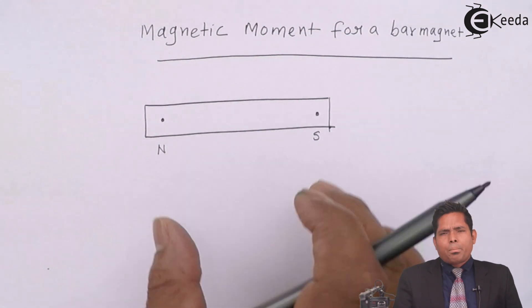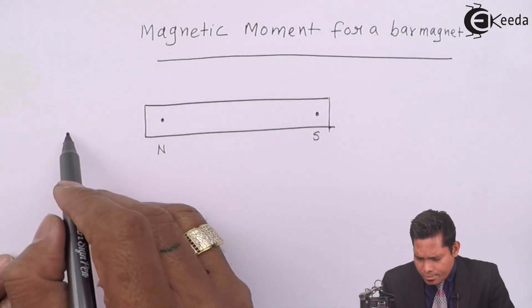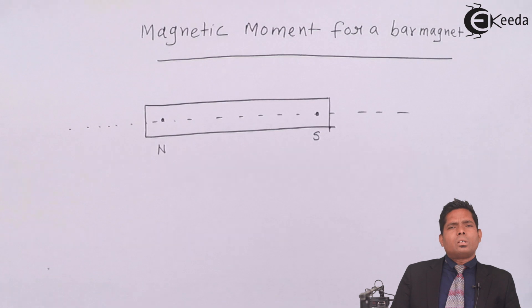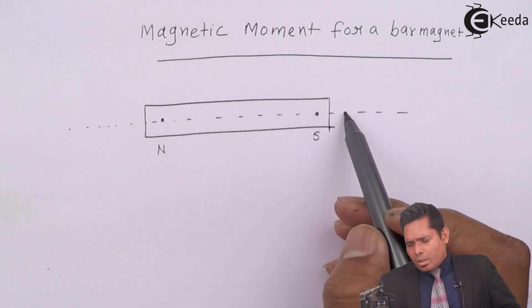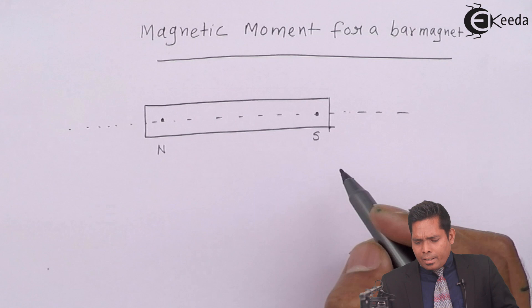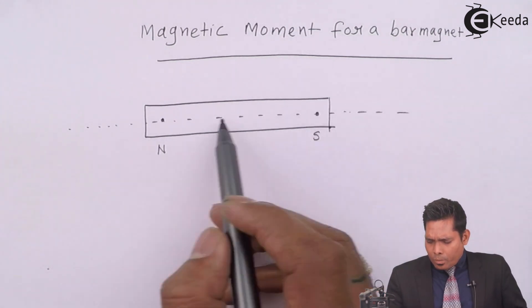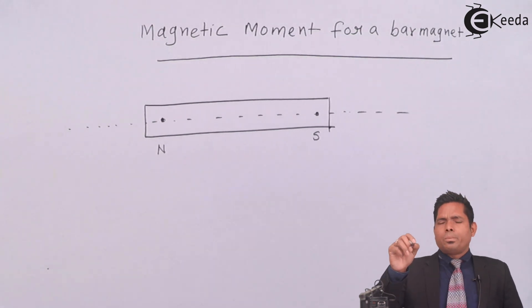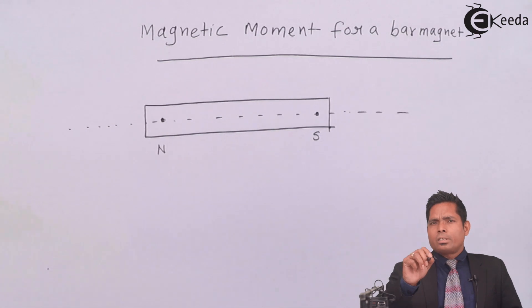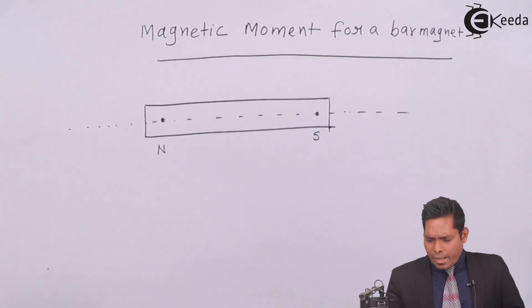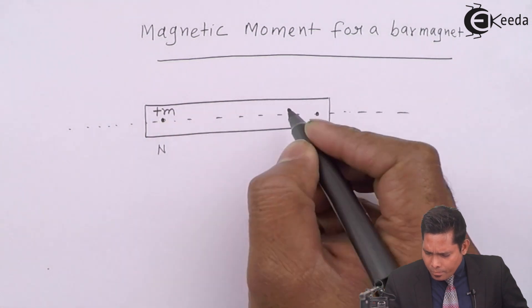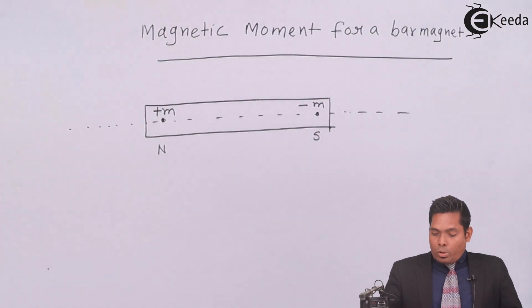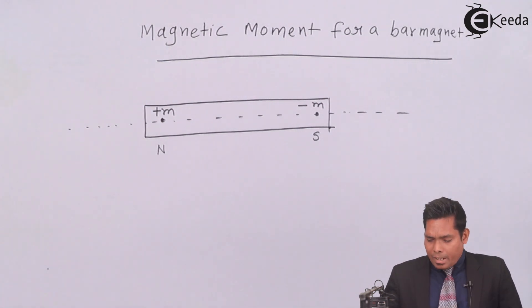Suppose this is a bar magnet and this is the axis — the line passing through the north pole and south pole. The strength of the north pole is considered as plus m, and the strength of the south pole is considered as minus m.